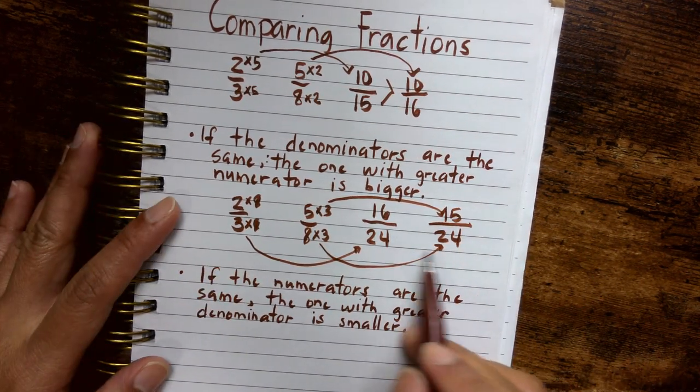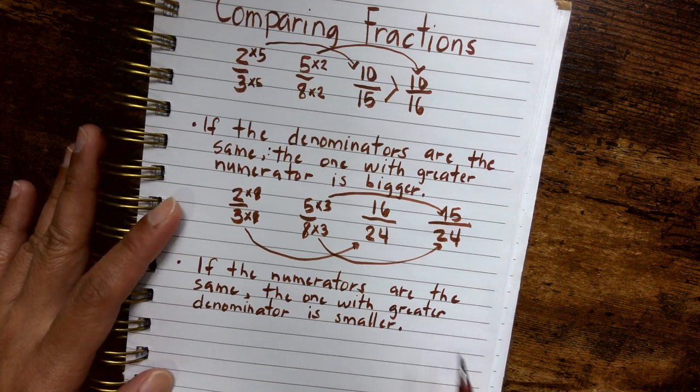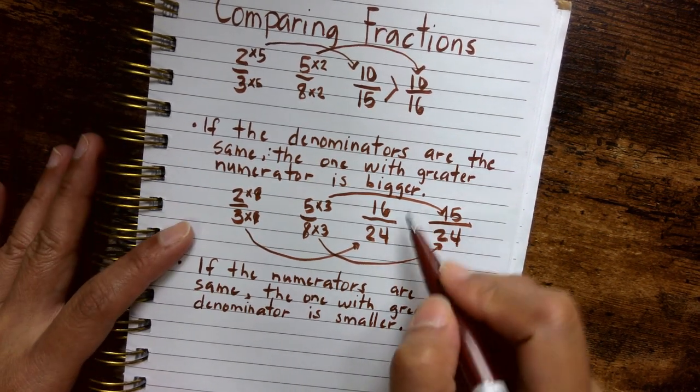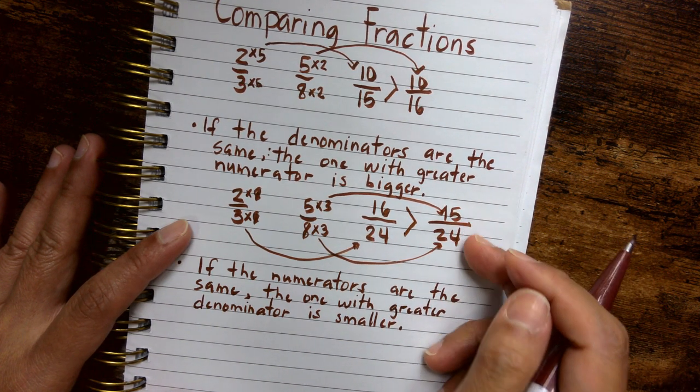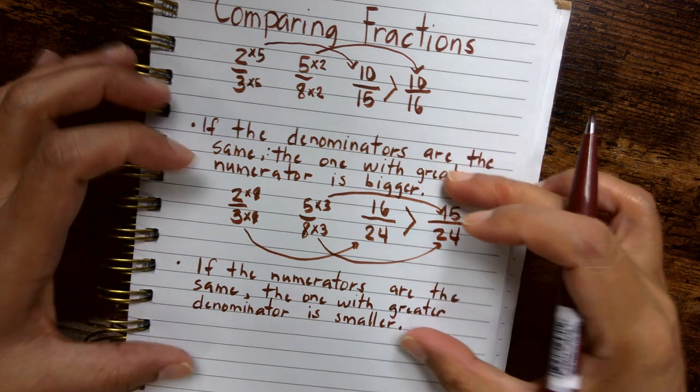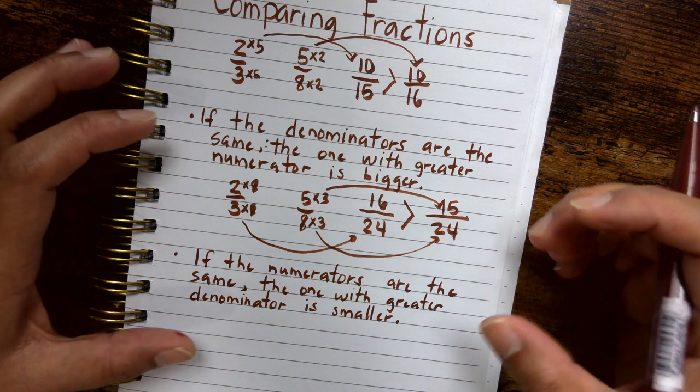So remember that if the denominators are the same, the fraction with a higher numerator is actually a fraction of a bigger size. So once again, 16 over 24 is greater than 15 over 24, which tells us whether you're changing the numerators or denominators to easily compare two fractions.